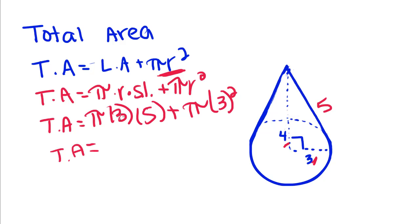So our total area is equal to 3 times 5, 15 pi plus 3 squared is 9, so our total area is equal to 24 pi units squared.